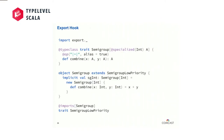Our third type-level project is Export Hook — it's Miles' project. The general idea of Export Hook is that we're going to define this one low-priority trait at the very bottom, annotate it with @imports — an annotation from Export Hook — and say we're going to import instances of Semigroup here. It's like an extension point. Then in our companion object for Semigroup, we'll just extend our low-priority trait.